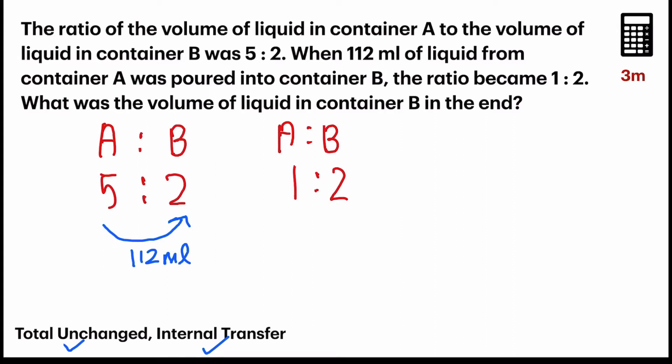So, what happens next? The ratio after the internal transfer became 1 is to 2. And since the total is unchanged, I'm going to add a new column for the total. So, for the column on the left-hand side, we have 7 units. And for the ratio on the right-hand side, we have 3 units. And since they should remain constant, 7 and 3 should be of the same value so that we are able to compare. So, 7 and 3, the common multiple is 21. So, we're going to change both ratios into this ratio units of 21.